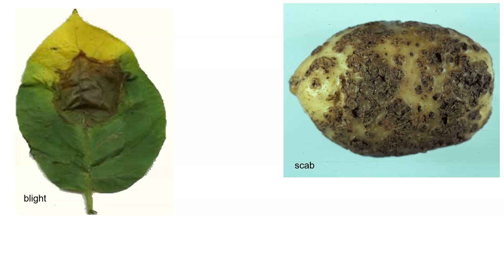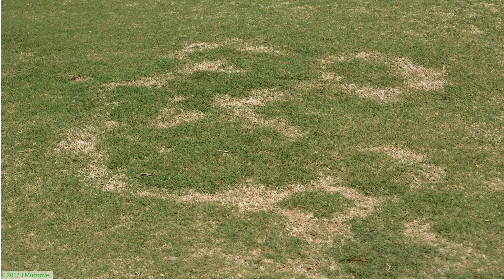The potato here has what we call scab. Scab is basically where the outer part looks like it's covered with scabs — a necrotic symptom that damages the outer part, while the inner part may still be fine, but the outer part has a rough texture. This is a turf grass area with a patch disease. A patch disease is interesting because rather than looking at symptomology on a single spot, you see a bunch of plants together expressing the same symptomology.